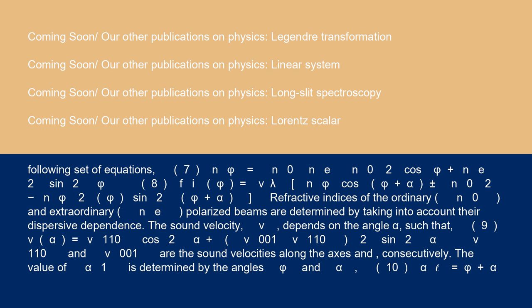The sound velocity v depends on the angle α such that Equation 9: v(α) = √(v110² cos²α + v001²·v110² sin²α). v110 and v001 are the sound velocities along the axis consecutively. The value of α1 is determined by the angles φ and α. Equation 10: α1 = φ + α.